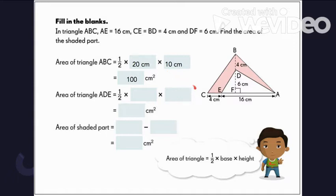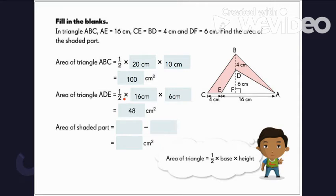Simply put, base times height divided by 2. Base is 20 times 10 is 200, divided by 2 is 100 square cm. Now that we have found the area of the big triangle, let us proceed to getting the area of the smaller triangle. Using the same formula, the base is equal to 16 cm and the height is equal to 6 cm. Multiplying this by 1/2, this will give us 48 square cm.